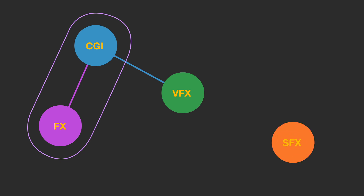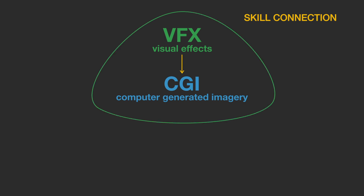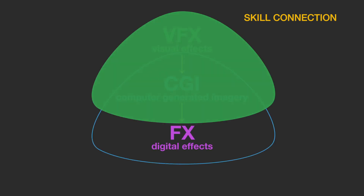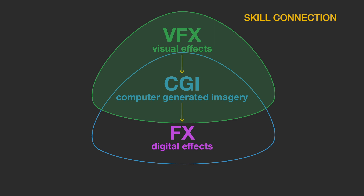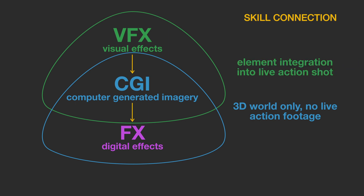Special effects are made on set, so they are not directly connected with post-production and are separate from the group. If you put them in a chronological order, it would be visual effects first, then CGI as a part of visual effects, and digital effects as a part of CGI. Visual effects artists can have CGI skills, whereas a CGI artist does not necessarily have visual effects skills. A CGI artist only works with the 3D world.